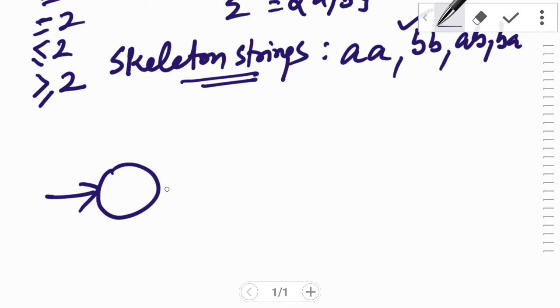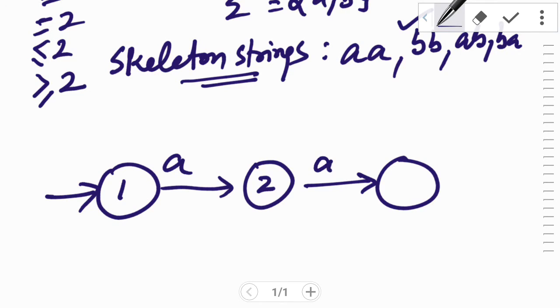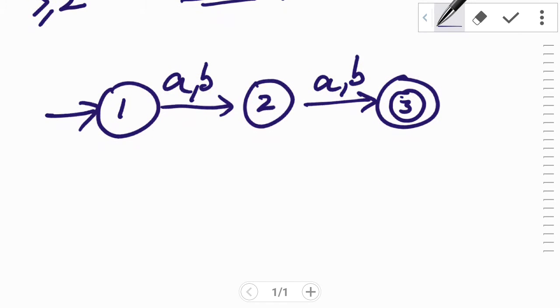Let's draw it for double a first. If I give an input a to state 1, again input a to state 2, it should be accepted hence it goes to the final state which is marked as 3. If input b comes to state 1, again input b comes to state 2, it should also be accepted therefore it reaches the final state.